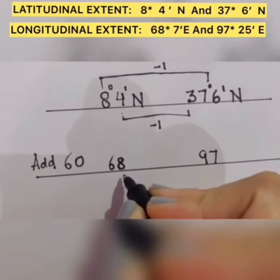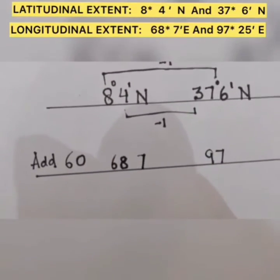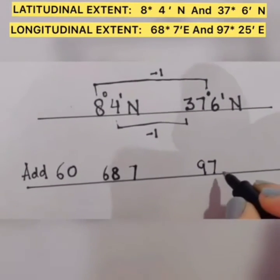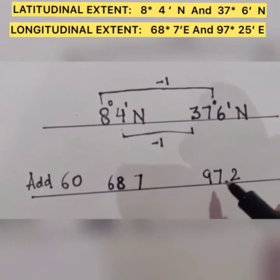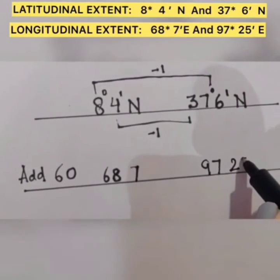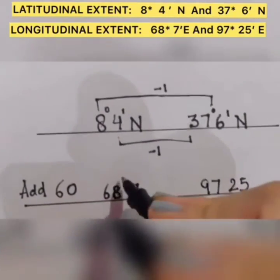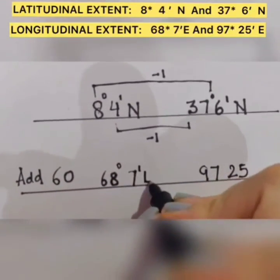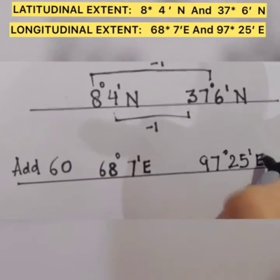Now again the subtraction game. Subtracting 1 from 8 becomes 7. Subtracting 1 from 9 gives 2. And subtracting 1 from 7 gives 5. So I get my longitudinal extent of India at 68 degrees 7 minutes east and 97 degrees 25 minutes east.